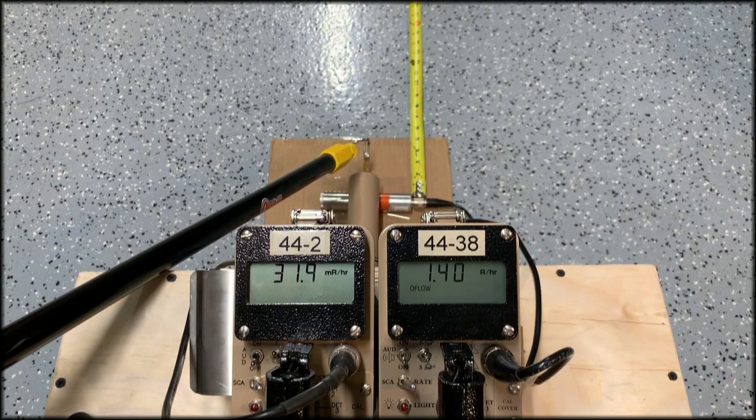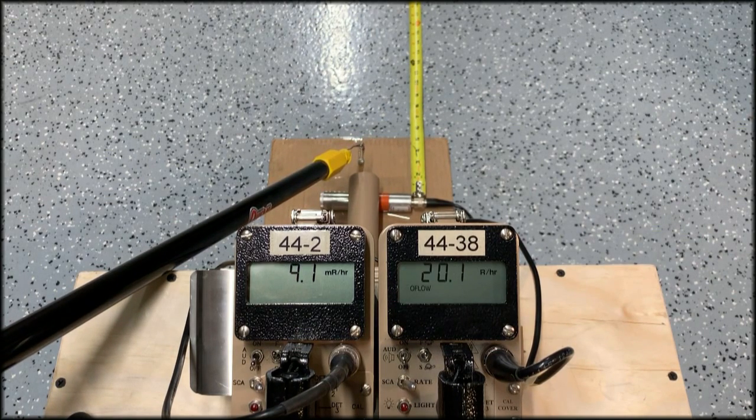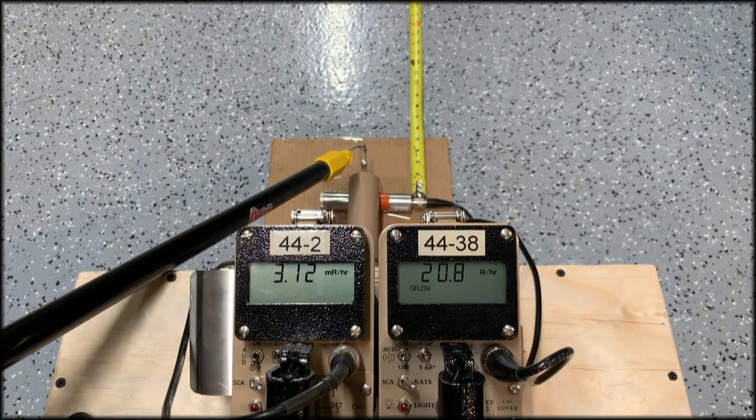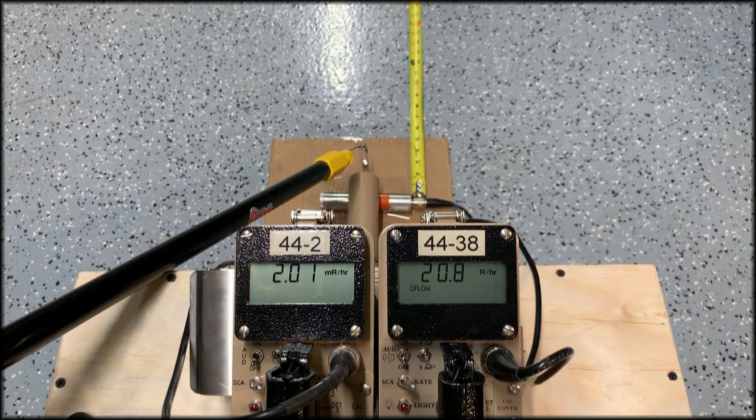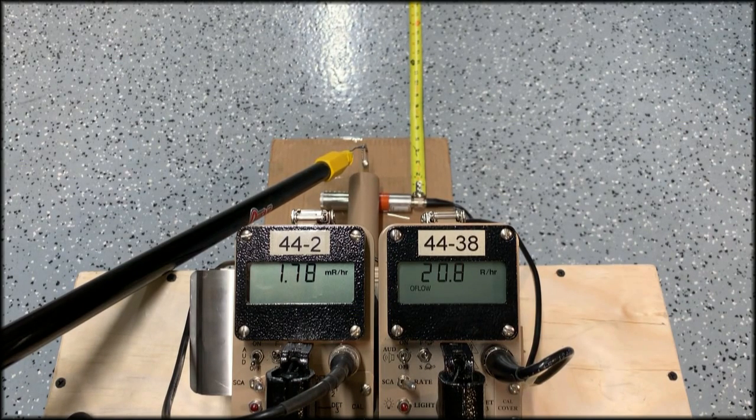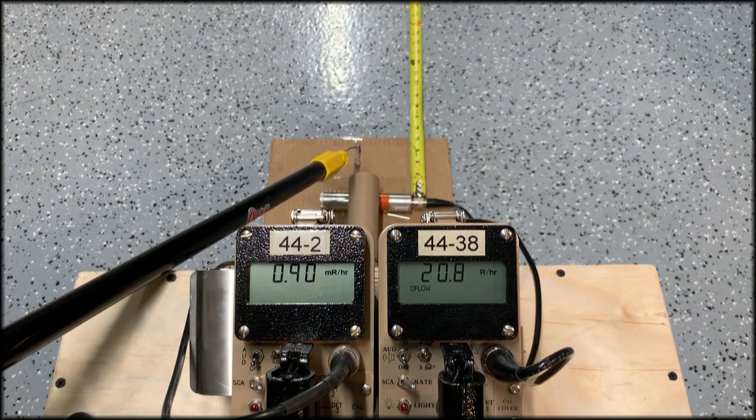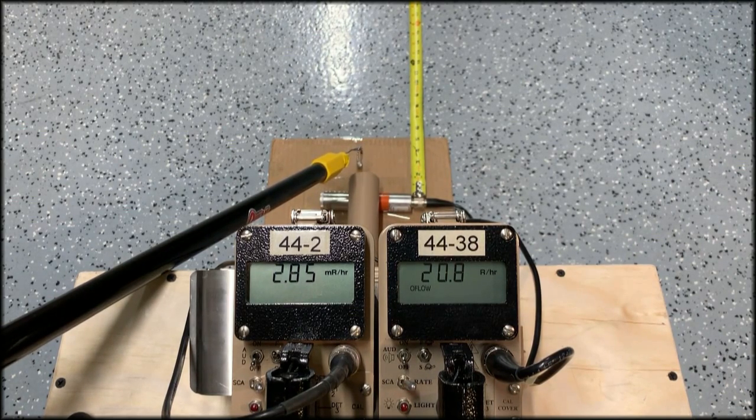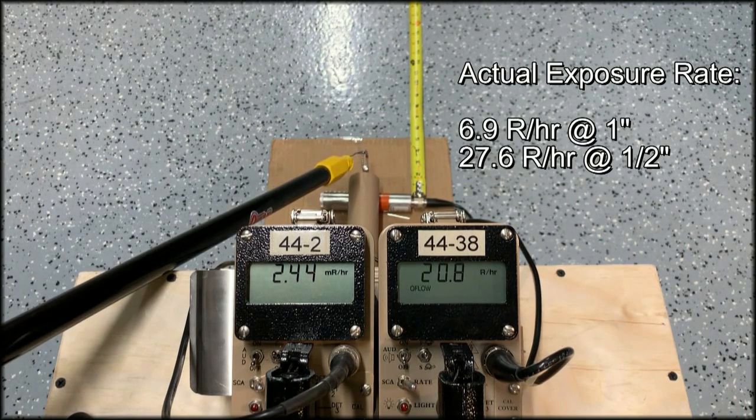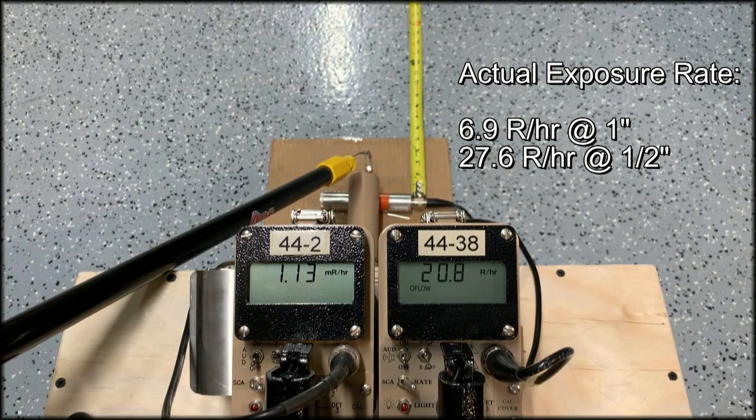And as I come in even closer, and I get right up close, maybe an inch or so away from that 44-2, you can see it's telling me it's only 2 mR per hour. But I'm, what does it say, 20 R per hour on the other detectors. So obviously this is a real problem.